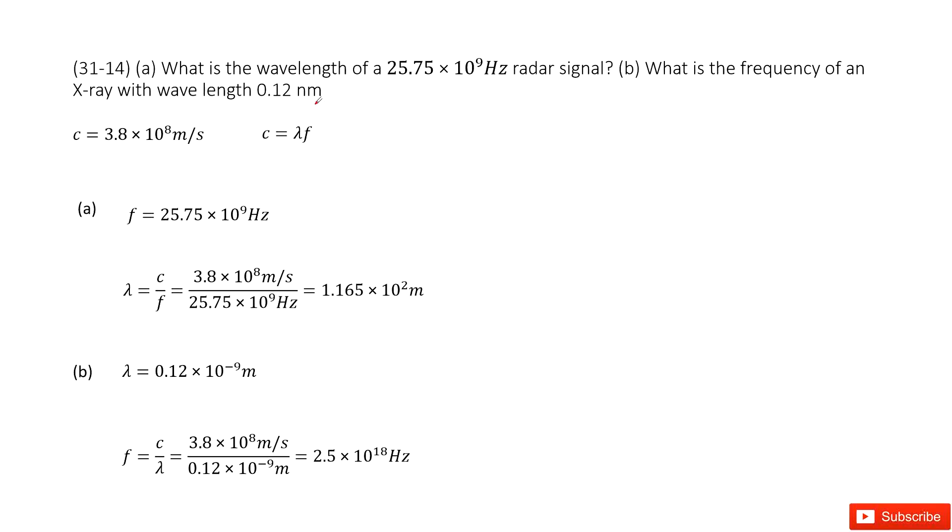For part A, we know the frequency of the wave and need to find the wavelength. The frequency-wavelength relationship is very straightforward. We can consider this equation: the speed of a wave equals the wavelength times the frequency.